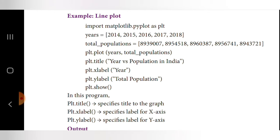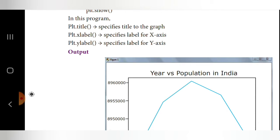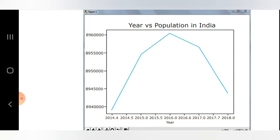We use plt.title to set the graph title as 'Year versus Population in India'. plt.xlabel sets the x-axis label as 'Year' and plt.ylabel sets the y-axis label as 'Total Population'. plt.show displays the graph on screen. The result is a line graph showing year on x-axis and population on y-axis.